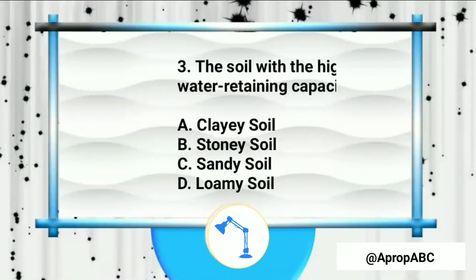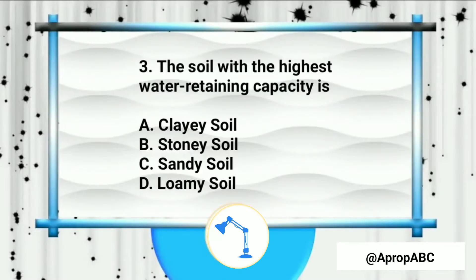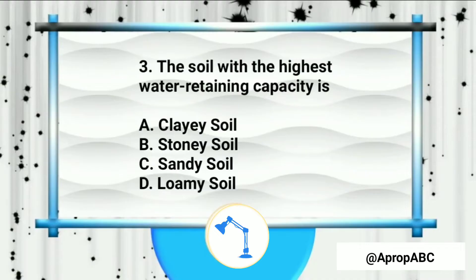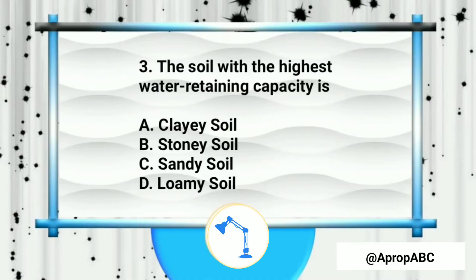So in increasing order, the answer is from clay to silt, from silt to sand, and from sand to gravel — that's option B. The soil with the highest water retaining capacity is clay soil. Clay has small, tightly packed particles, so water is not able to percolate through, meaning it retains the highest amount of water.